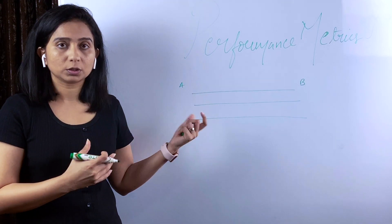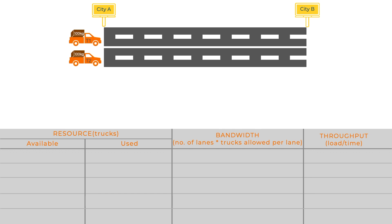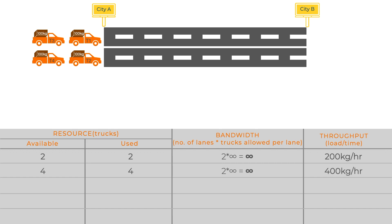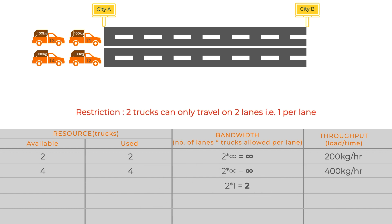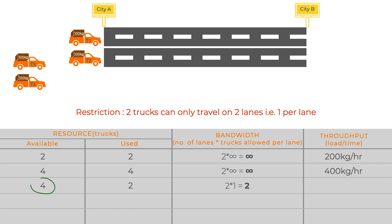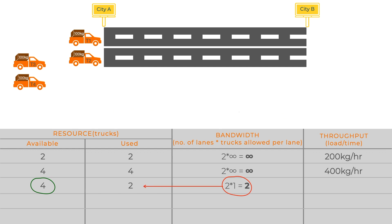Using the truck example: with a two-lane road, two trucks can move and transfer 200 kg per hour. With four trucks, it becomes 400 kg per hour. But suppose there's a restriction that at any given time, only two trucks can transfer from A to B. Even if you could supply a higher throughput of 400 kg per hour, the bandwidth — the lane restriction — limits you to only 200 kg per hour. You are constrained by the bandwidth.